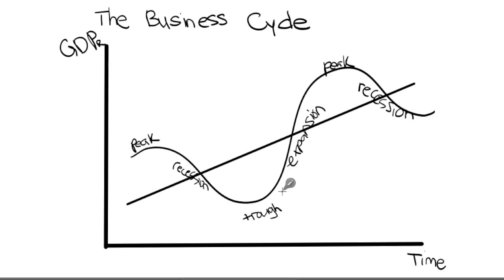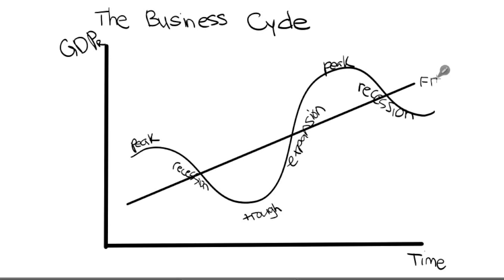The business cycle essentially looks at how the real GDP increases over time. This is our line of best fit, and this really represents full employment, shown as time increases.